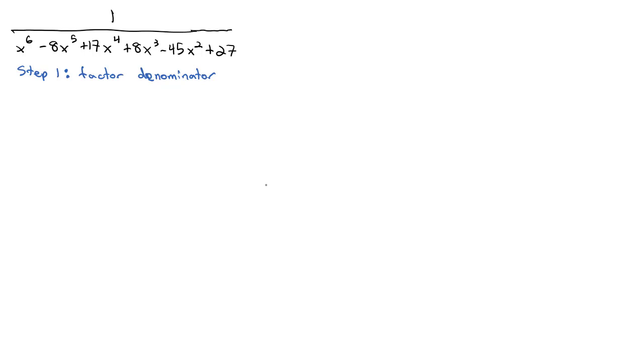We know from the rational root theorem that the factors of 27 are 1, 3, 9, and 27. And the factors of 1 out front is 1, which means the possible roots are 1 over 1 plus or minus, 3 over 1, 9 over 1, and 27 over 1 plus or minus.